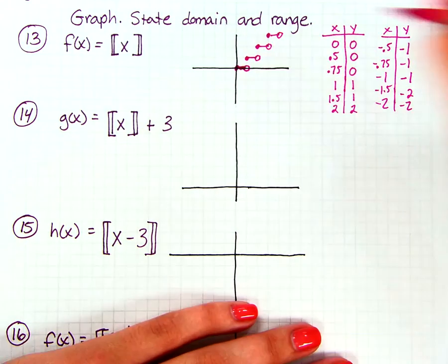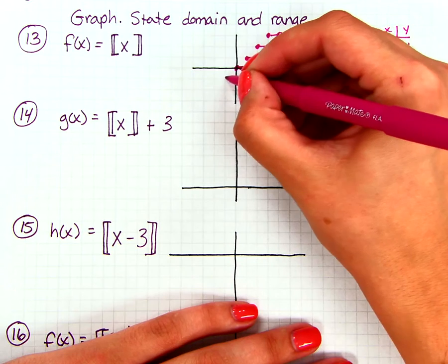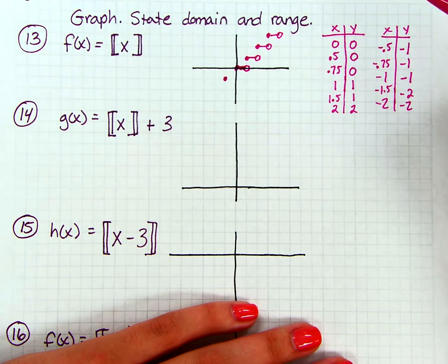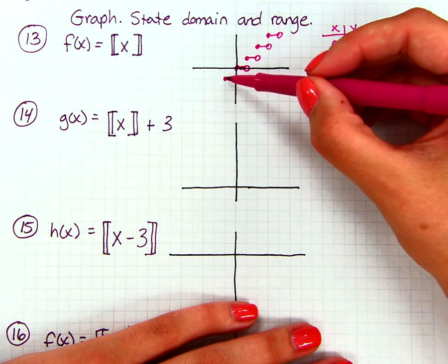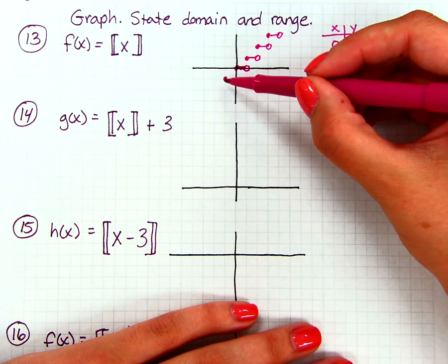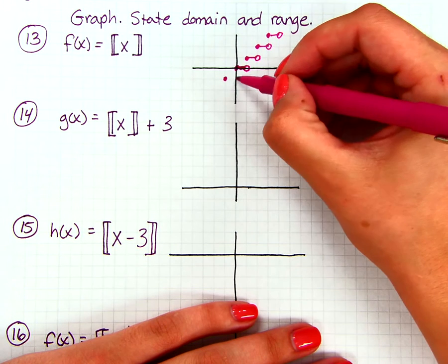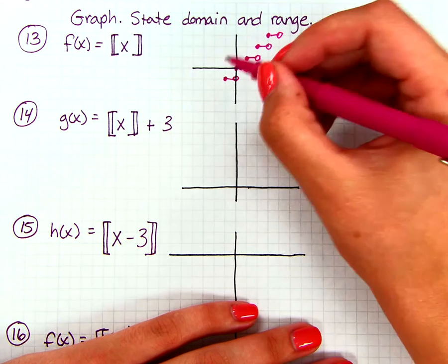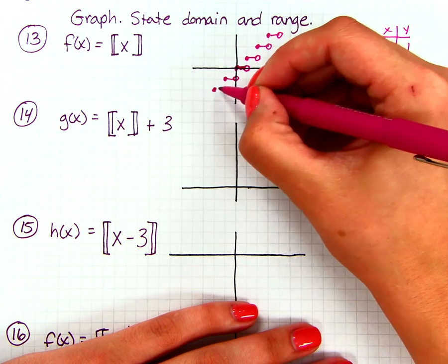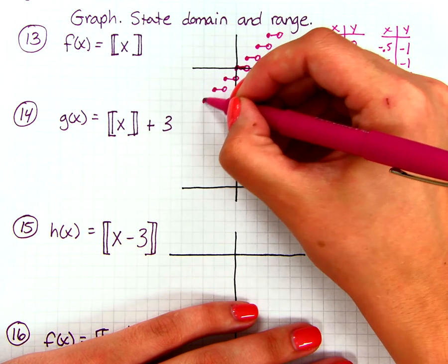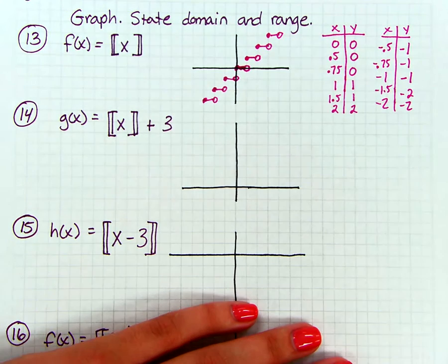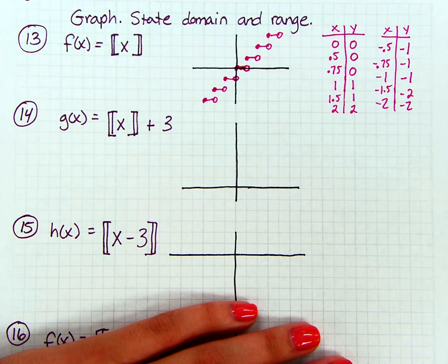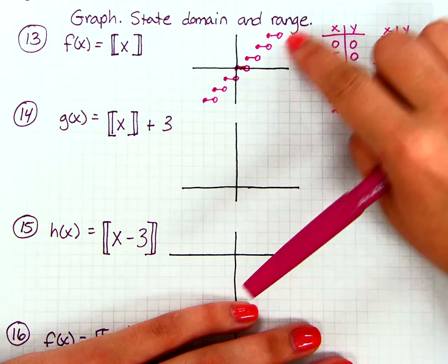So if I'm at negative 1, negative 1, here's my solid dot. Everything in between negative 1 and 0 is going to be on that one line for the y, and I'm going to have an open circle here. Again, that same exact pattern is going to continue forever in this direction. So it's starting to look like a staircase. So that means that every greatest integer function is going to have to look something like this.